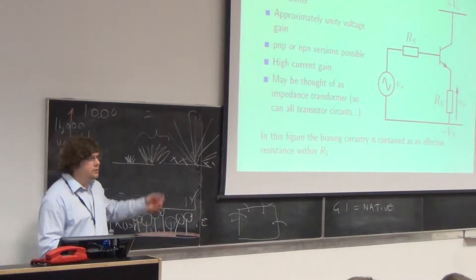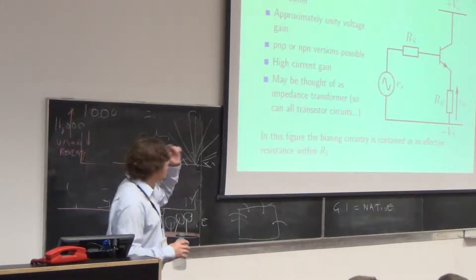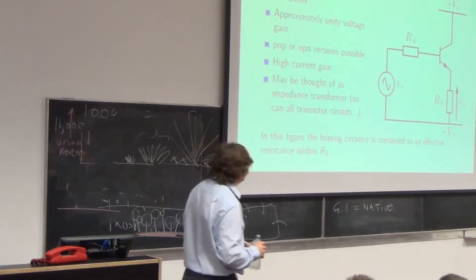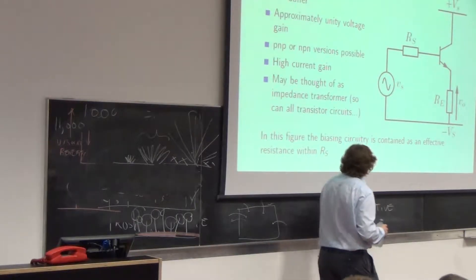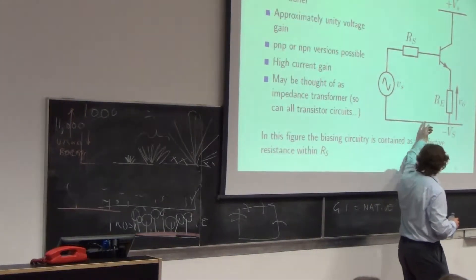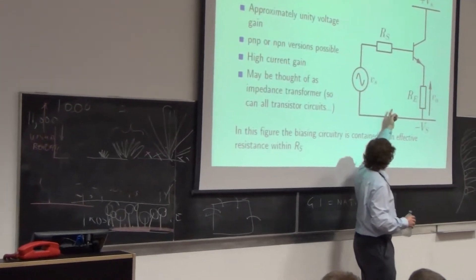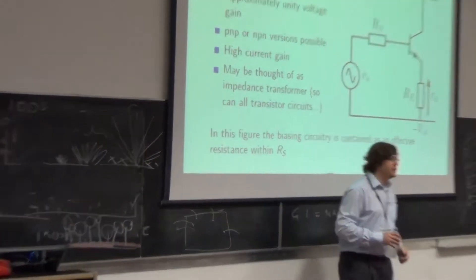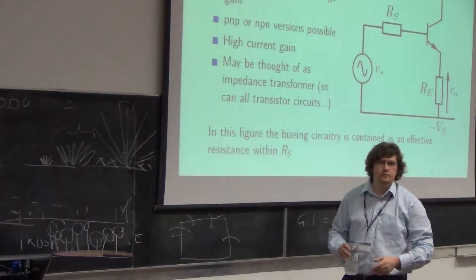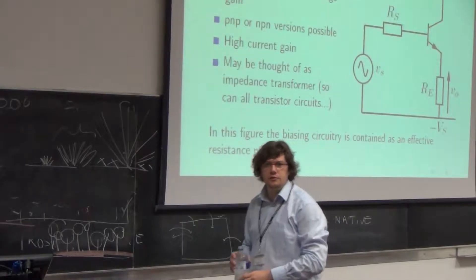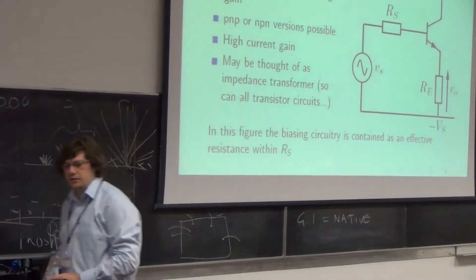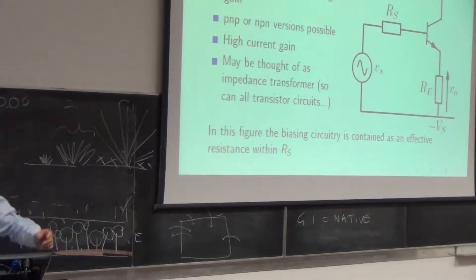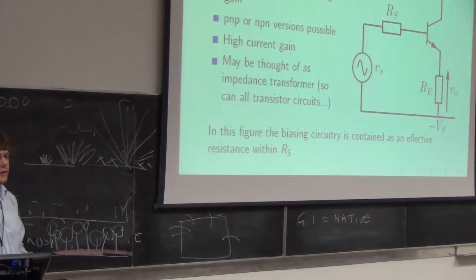Same as with all the things that I'm doing in these first few lectures, RS contains the biasing components that you'd need. So really I'd need a resistor from the base to the minus VS, and a resistor from the base to plus VS, in order to put the transistor into an operating region where it's going to be biased actively. But I'm just consuming all of those with RS to make it look a bit nicer, or a bit cleaner.